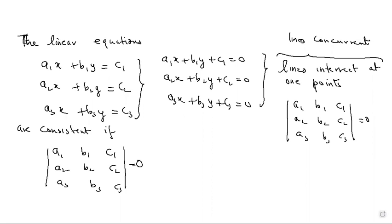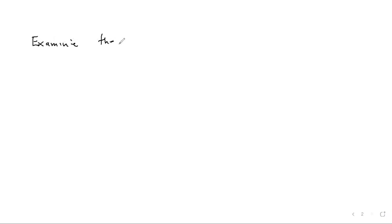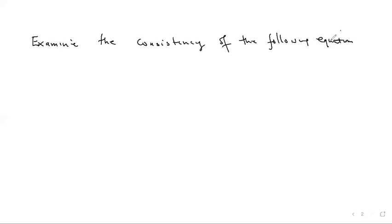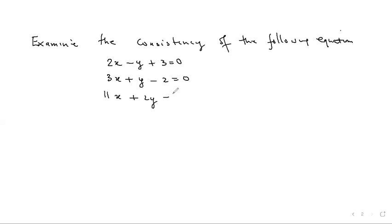First problem: Examine the consistency of the following equations — 2x − y + 3 = 0, 3x + y − 2 = 0, 11x + 2y − 3 = 0.